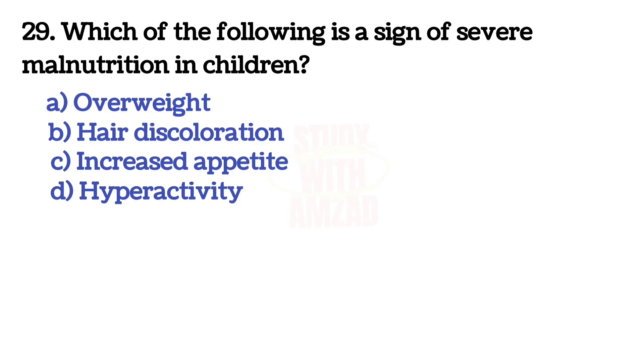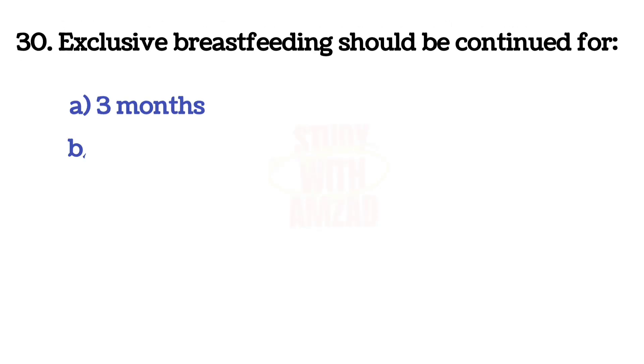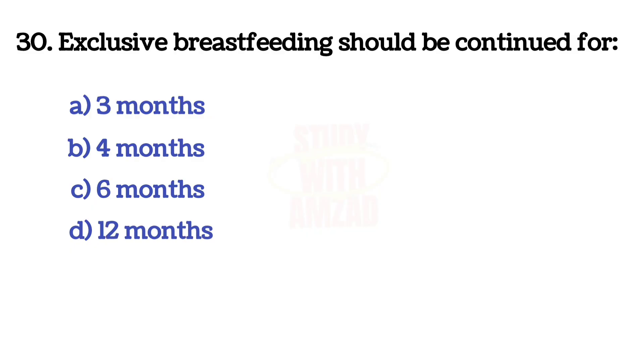Next question: Which of the following is a sign of severe malnutrition in children? The correct answer is B — hair discoloration.